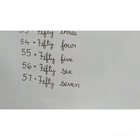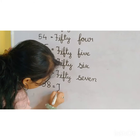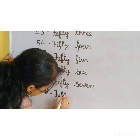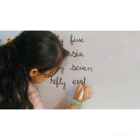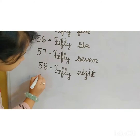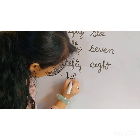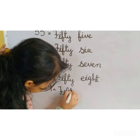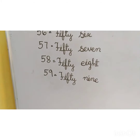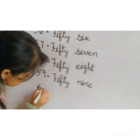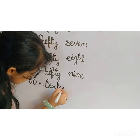7, 57. 5, 8, 58. F-I-F-T-Y, 58. 5, 9, 59. F-I-F-T-Y, 50. 60. S-I-X-T-Y, 60.